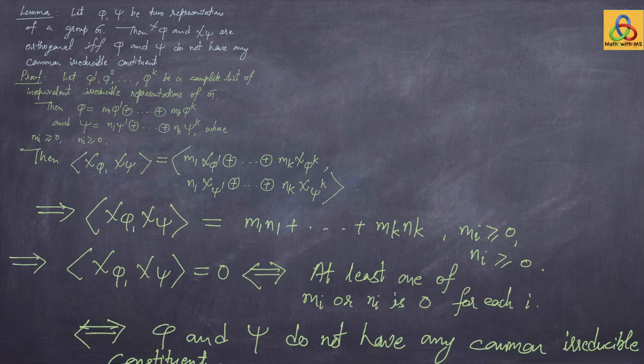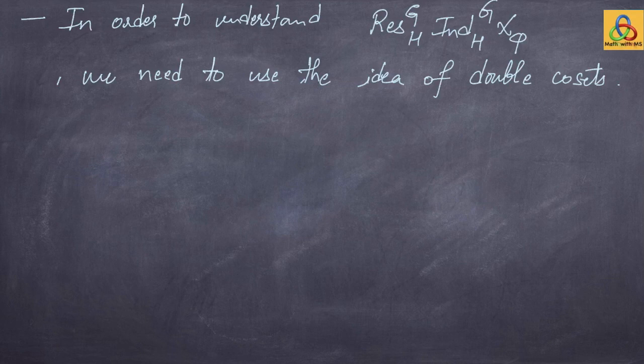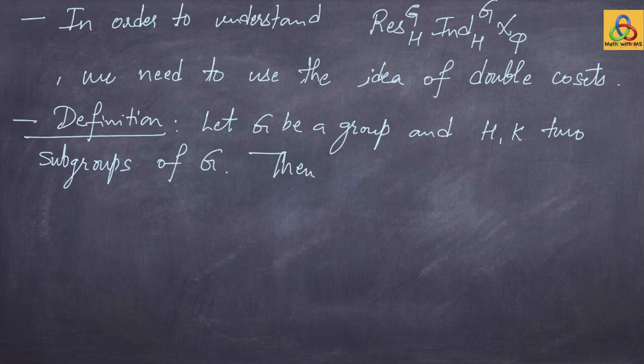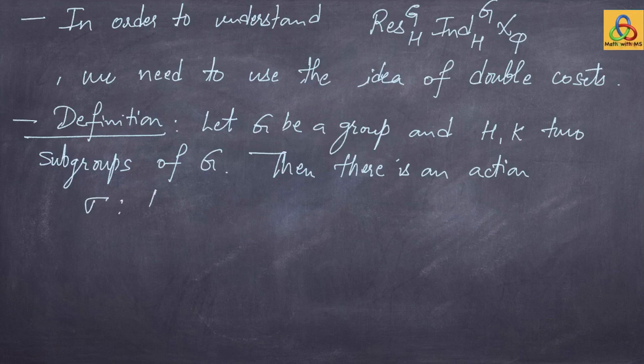Characters of two representations are orthogonal if and only if they do not have any common irreducible constituent. In order to understand induction of a character from a subgroup followed by restriction back to a subgroup, we need the idea of double cosets. Let G be a group and H and K two subgroups of G — they could be the same or one could be trivial.